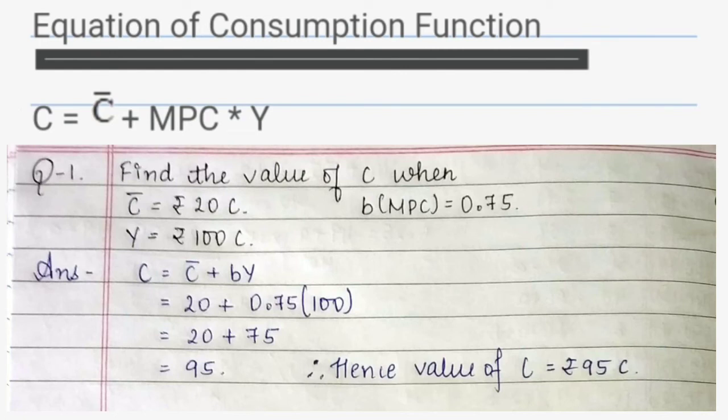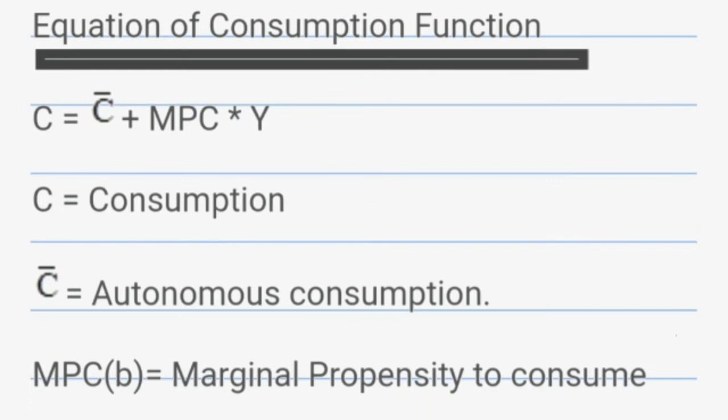Let's do some example question so as to know how the equation works. The question is find the value of C, that is consumption, when the C bar, that is autonomous consumption, is 20 crore, income is 100 crore and MPC is 0.75. According to the equation C equals to C bar plus B into Y and when we put the values as said in the question we get the value of consumption as rupees 95 crore. These types of questions are very simple because you need to just put the values.